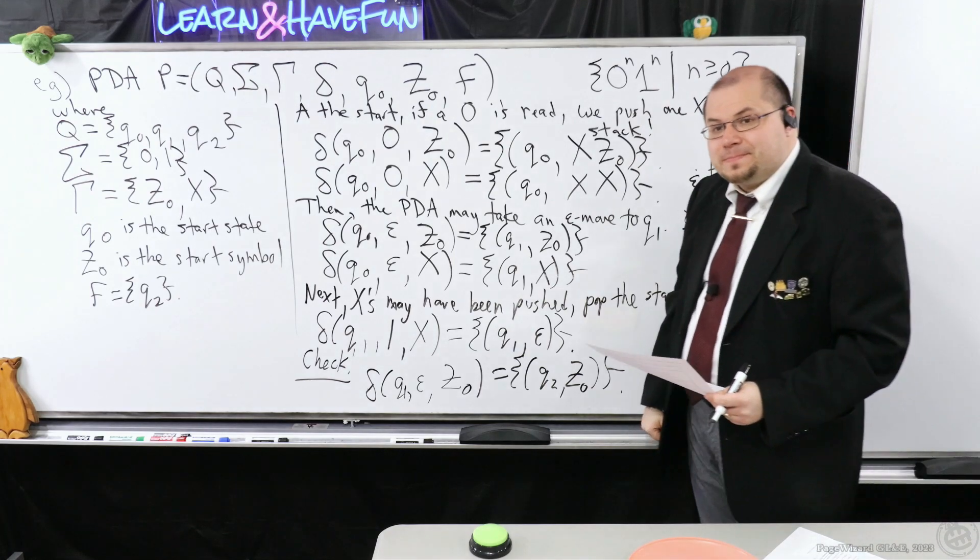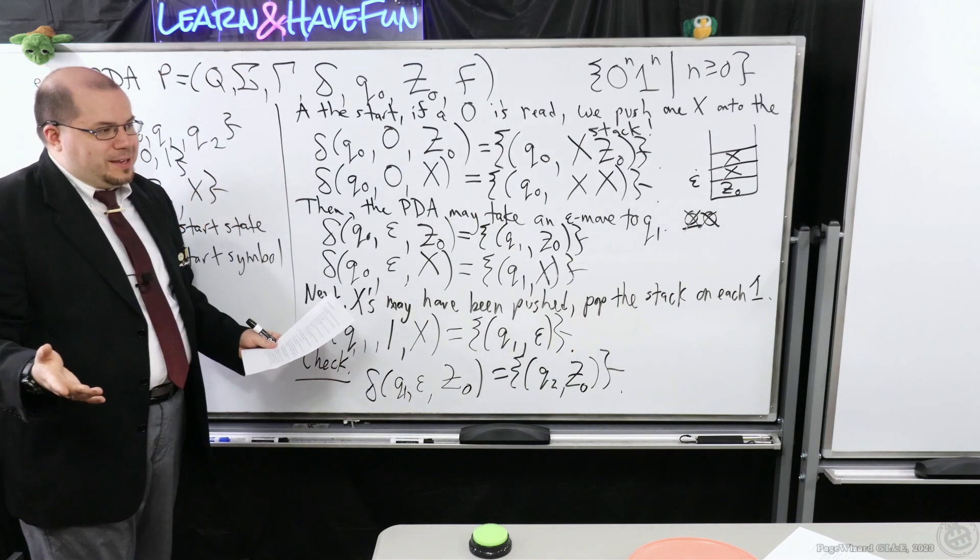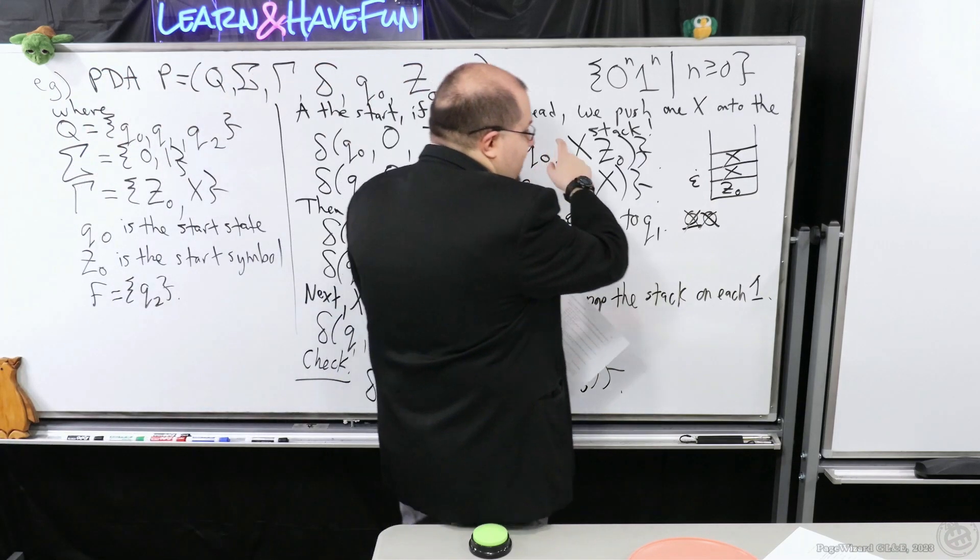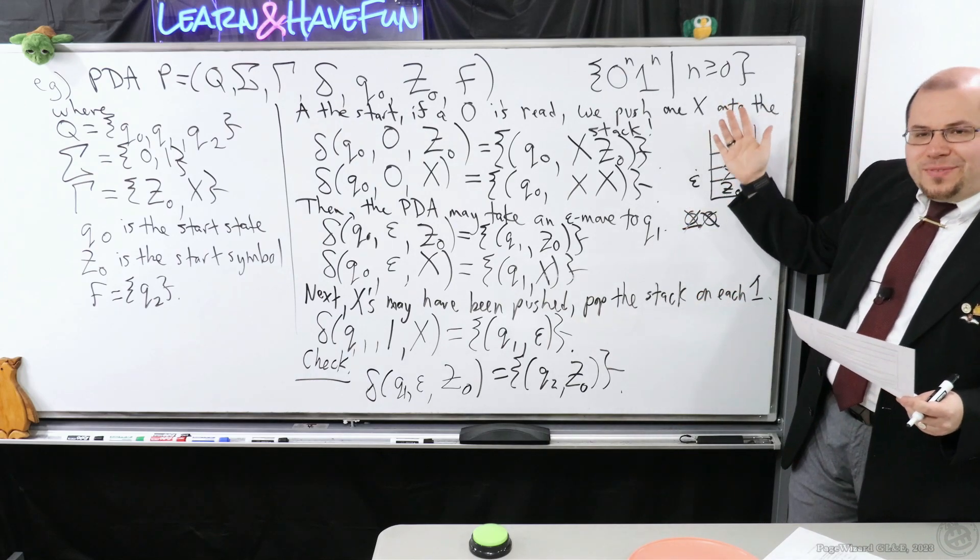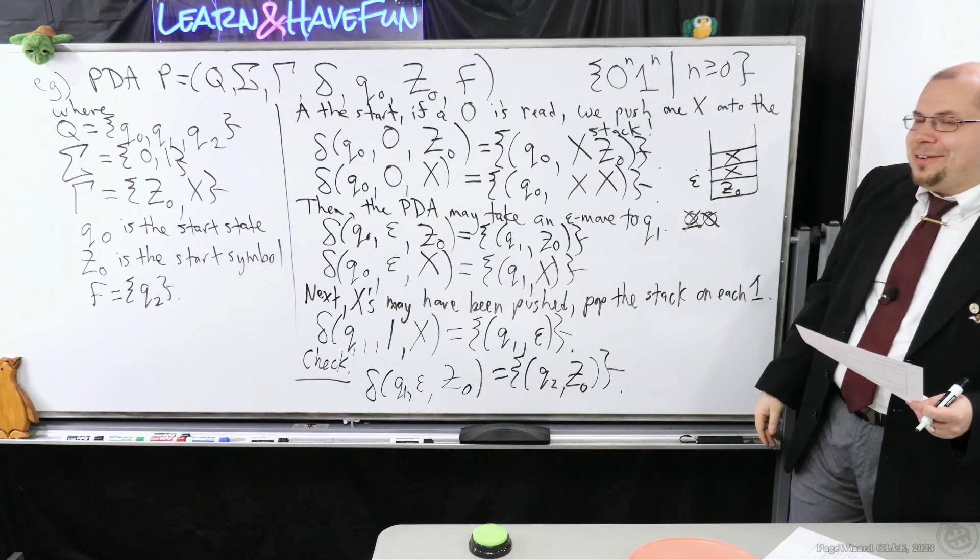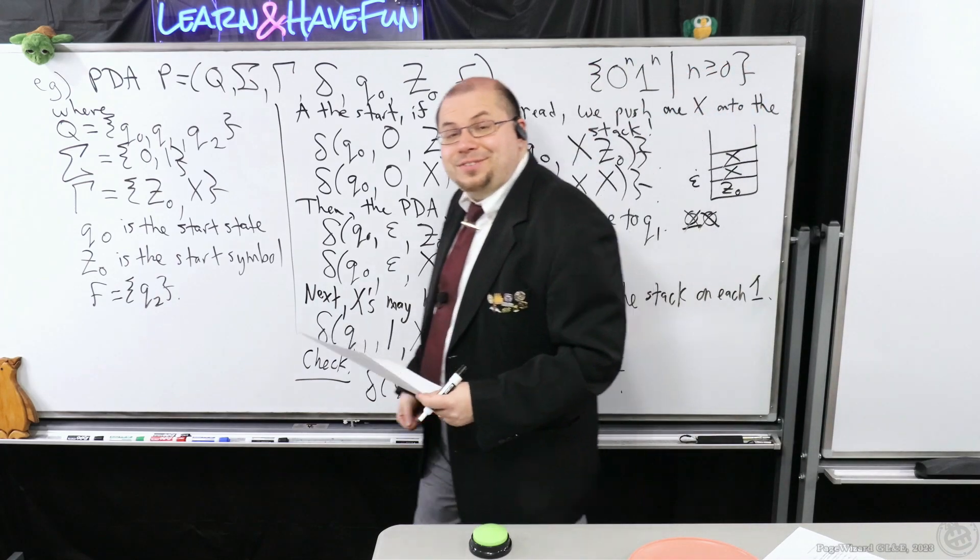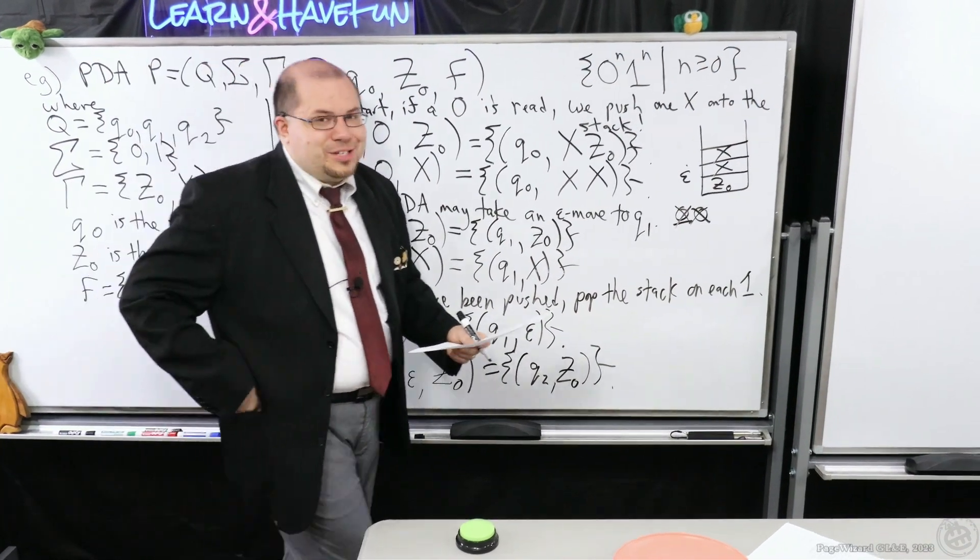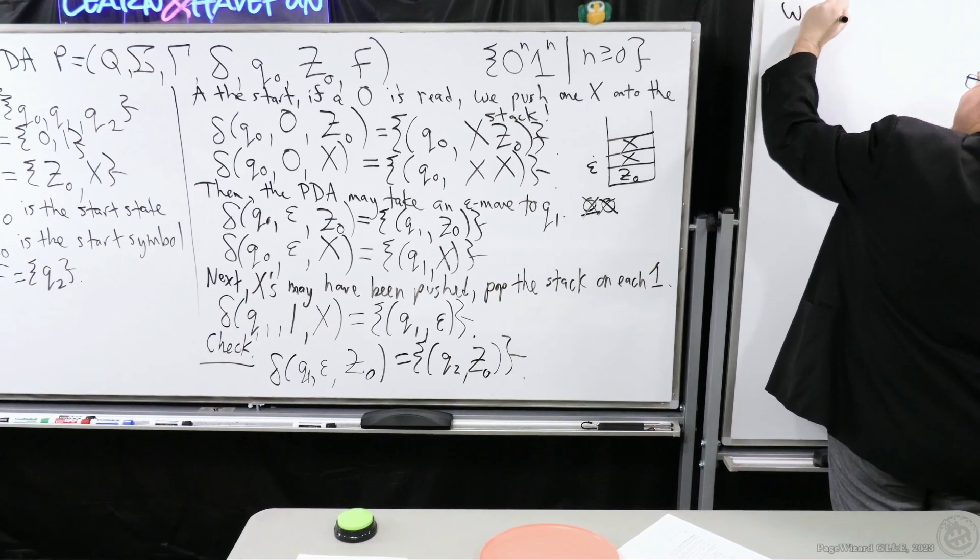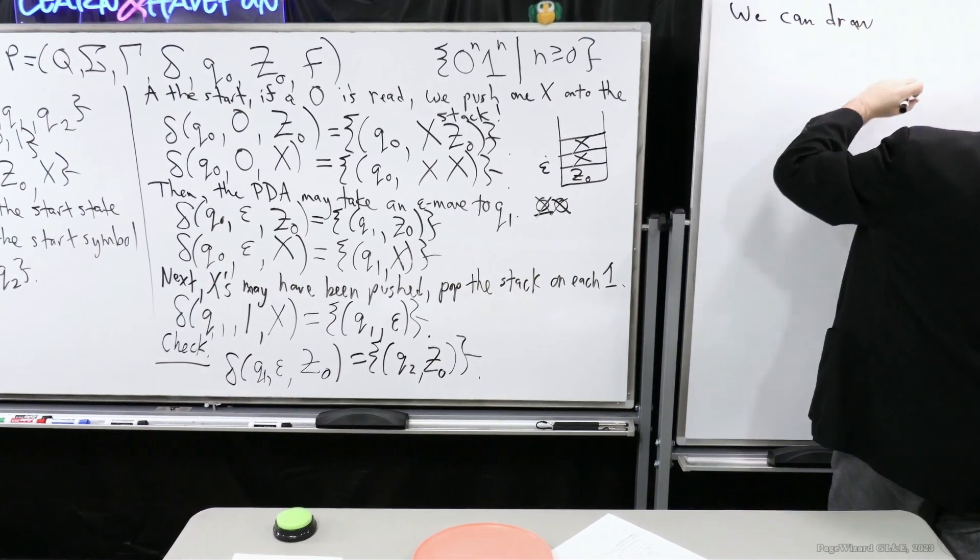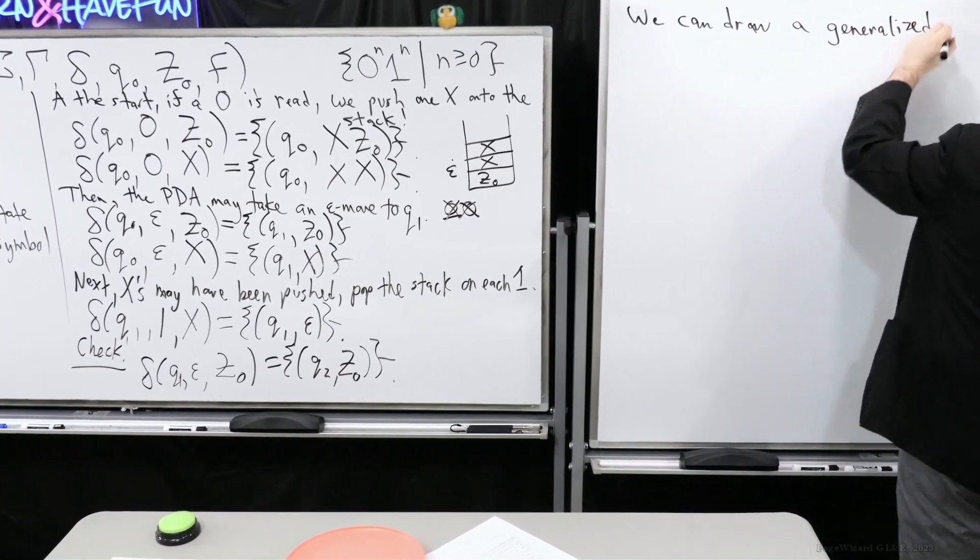So if you're wondering where all the other triples are, they're all empty. They're going to result in empty sets. So you might ask, is there a nice, convenient way for me to describe this without having to do all of this triples business with the pairs and sets? Yes, of course there is. There's a generalized transition diagram. Now I'm going to show you how that works. So we can draw a generalized transition diagram.